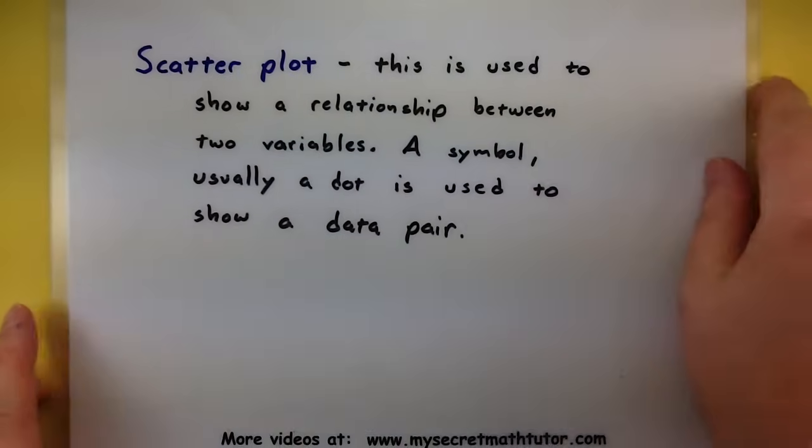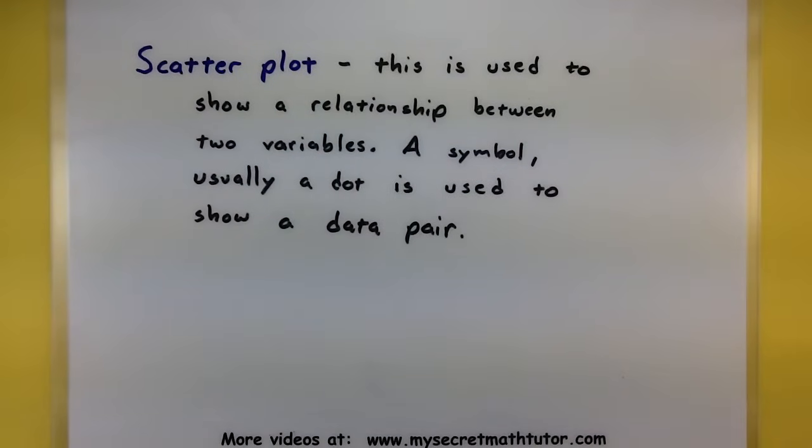To be a little bit more specific, in a scatter plot we use these to show a relationship between two variables. Now usually a symbol, usually a dot, is used to show an individual pair of data.